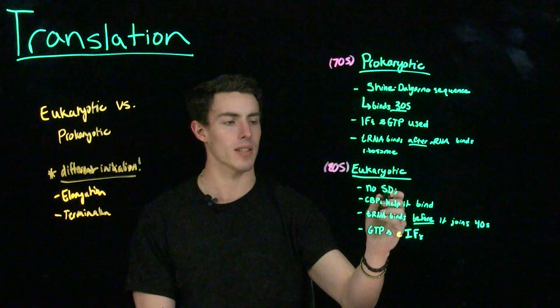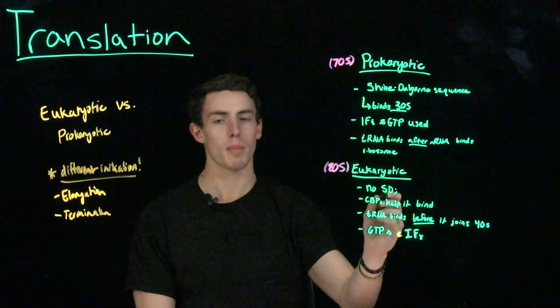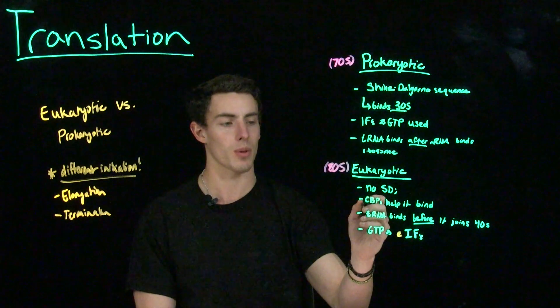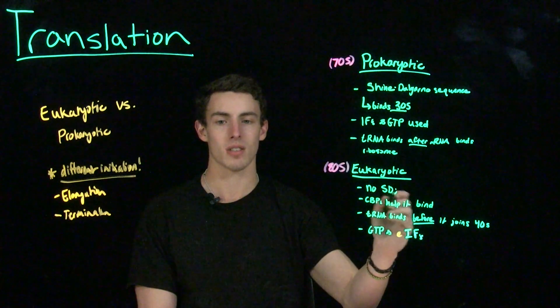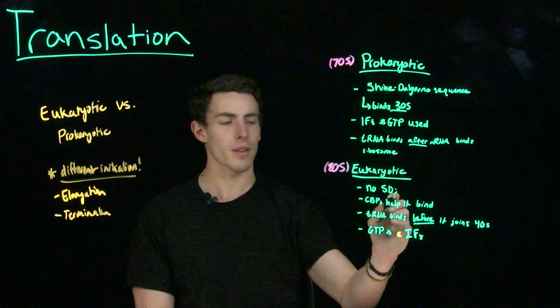However, eukaryotic cells don't have this. They don't have a Shine-Delgarno sequence, but they do have that 5' cap. And what they'll have is cap-binding proteins. And these cap-binding proteins are actually going to help them bind to the small subunit of the ribosome.